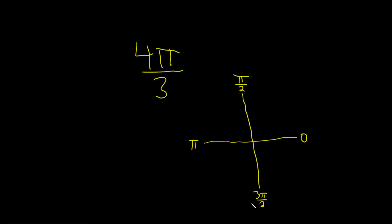So where is 4π over 3? Well, the best way to do it, for me at least, is to think of π as a number over 3. So this is really 3π over 3.